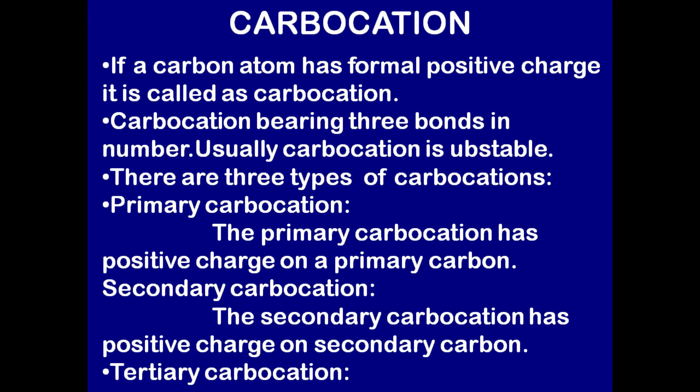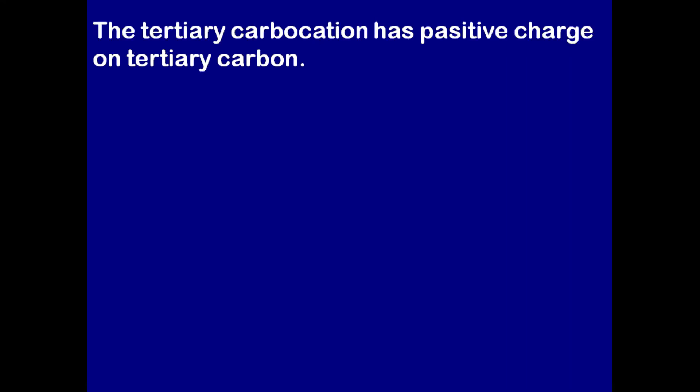There are three types of carbocations. Primary carbocation: the primary carbocation has a positive charge on a primary carbon. Secondary carbocation: the secondary carbocation has a positive charge on a secondary carbon. Tertiary carbocation: the tertiary carbocation has a positive charge on a tertiary carbon.